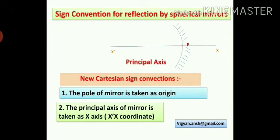This is the principal axis. Here is the X axis, or what we can say is X dash, X coordinate. The X coordinate is the right side of the pole, and the X dash coordinate is the left side of the pole.